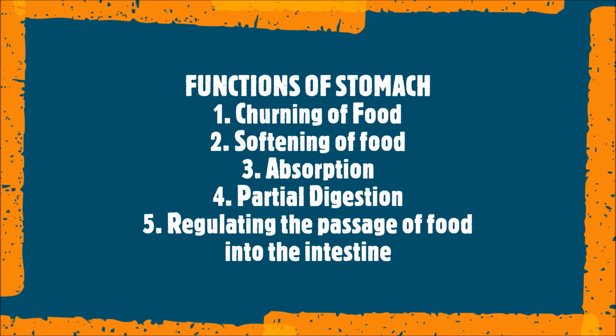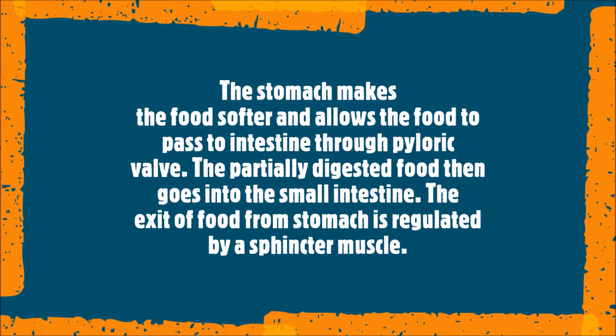The functions of the stomach: it mixes food with gastric juice in a process called churning. It softens the food with hydrochloric acid and stores undigested food temporarily. The stomach absorbs some soluble components such as glucose, alcohol, and minerals. The indigested food is partially digested by enzymes in the gastric juice. Finally, it regulates the passage of food into the small intestine through a valve called the pyloric valve. The exit of food from the stomach is regulated by a muscle called the pyloric sphincter.